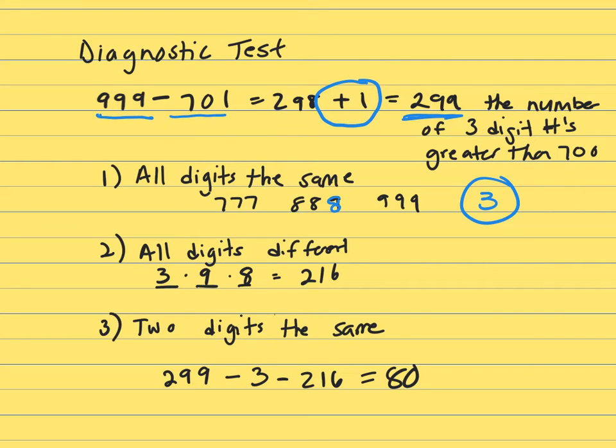Your other possibility would be where each digit in this three-digit number is different. So let's use the fundamental counting rule. We're talking about three digits, and we're talking about numbers in the 700s, 800s, and 900s. So this first digit is the 100th position, and you have three possibilities. It's either going to be a 7, 8, or 9.